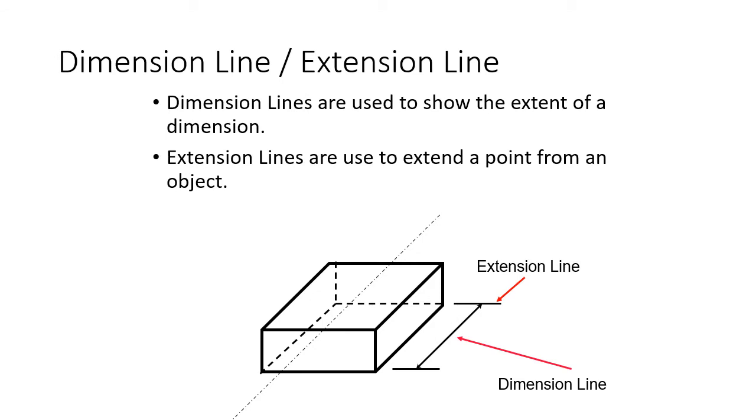Okay, so here we've got dimension lines and extension lines. Dimension lines are used to show the extent of a dimension, so that is going to have a number generally in it, like three inches or seven inches. Here's an extension line. Extension lines are used to extend a point from an object. Because if we didn't have extension lines and we just came off that object with a line, the drawings would get too messy. So we have what's called an extension line. It just tells us that it's an imaginary line that comes off of that edge and we use it for dimensioning. That's what an extension line is used for. Extension lines 99% of the time go with a dimension line.